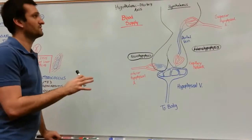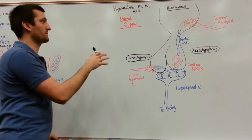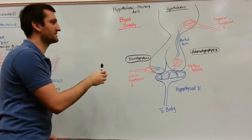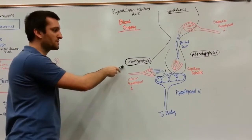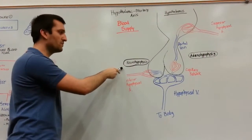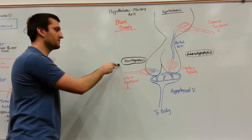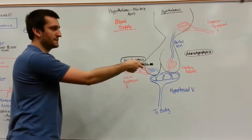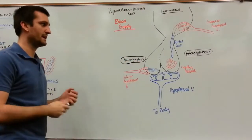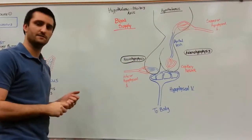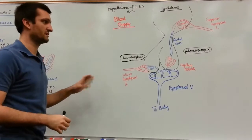So we just covered the anatomy of the hypothalamic-pituitary axis. From now on, I'm going to refer to the posterior pituitary as the neurohypophysis and the anterior pituitary as the adenohypophysis. That just helps get the diction and keeps the terms to a minimum.